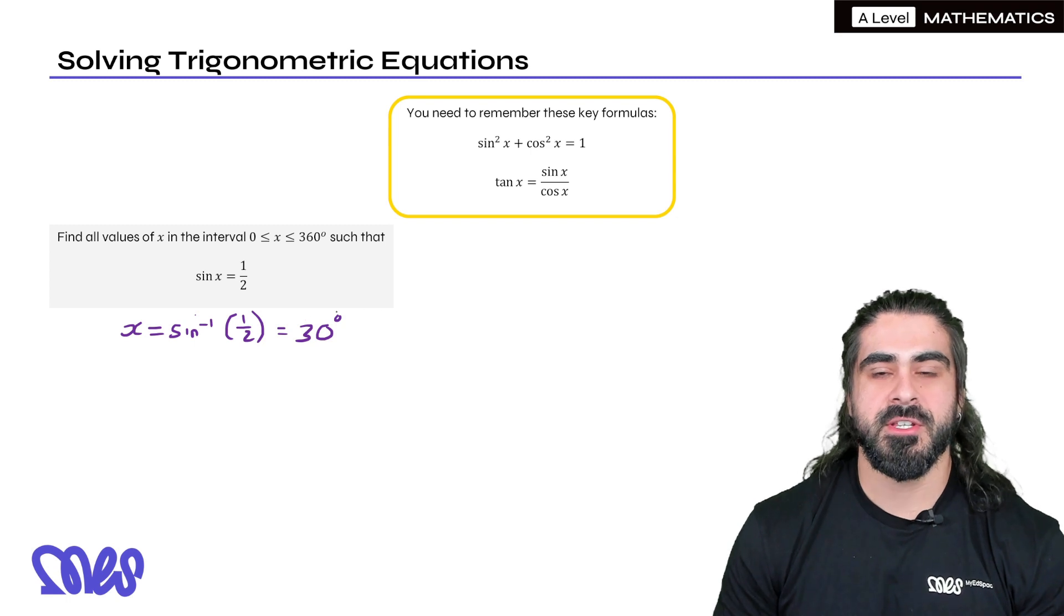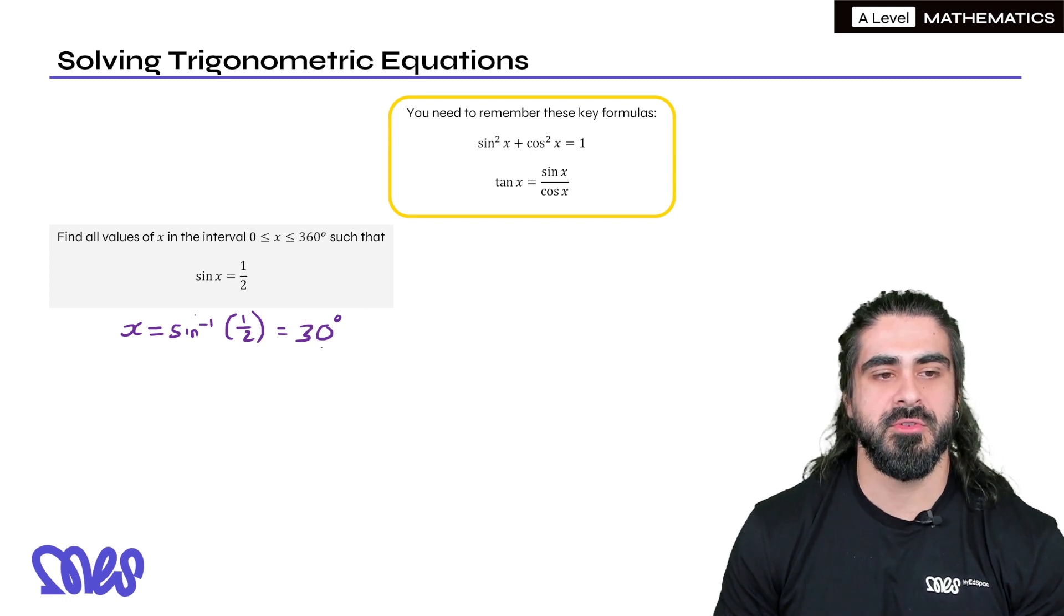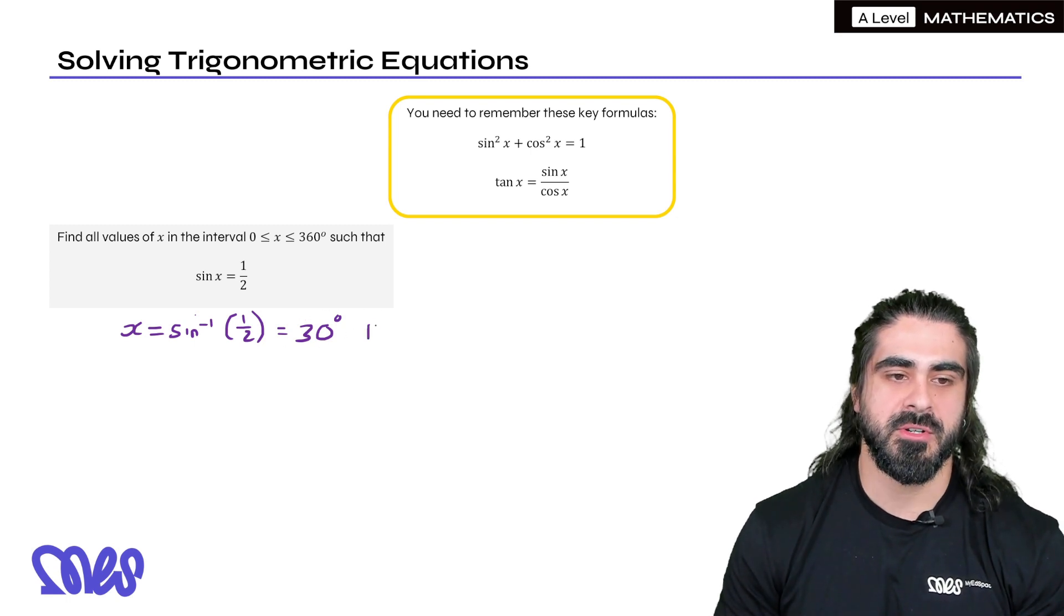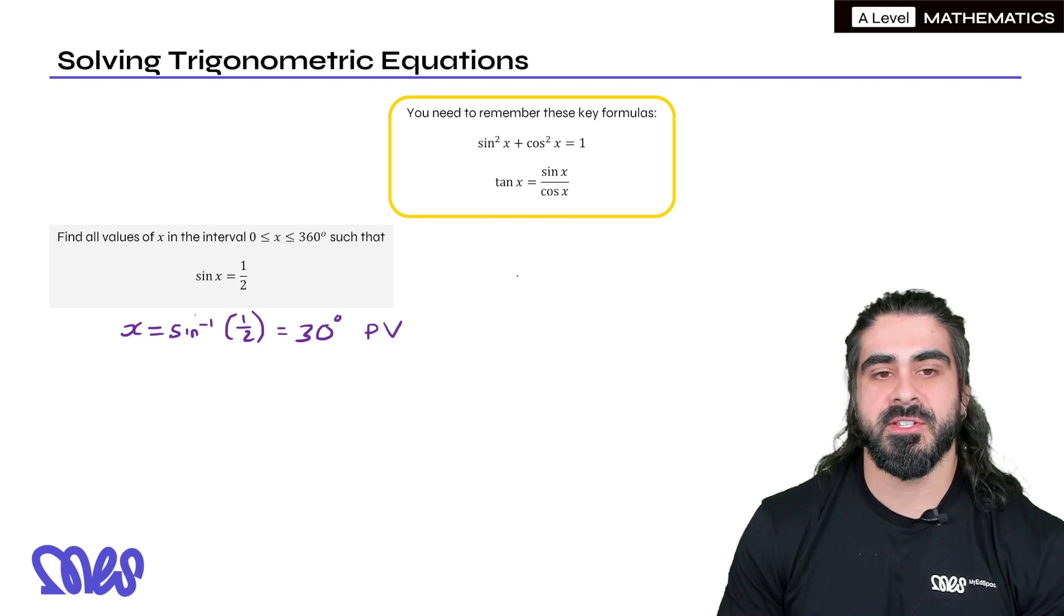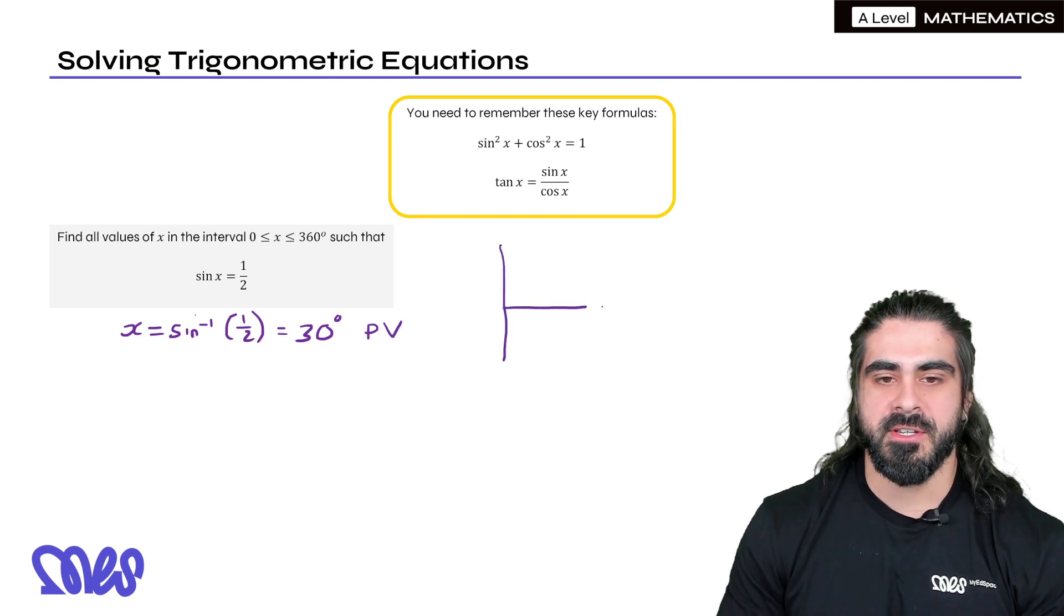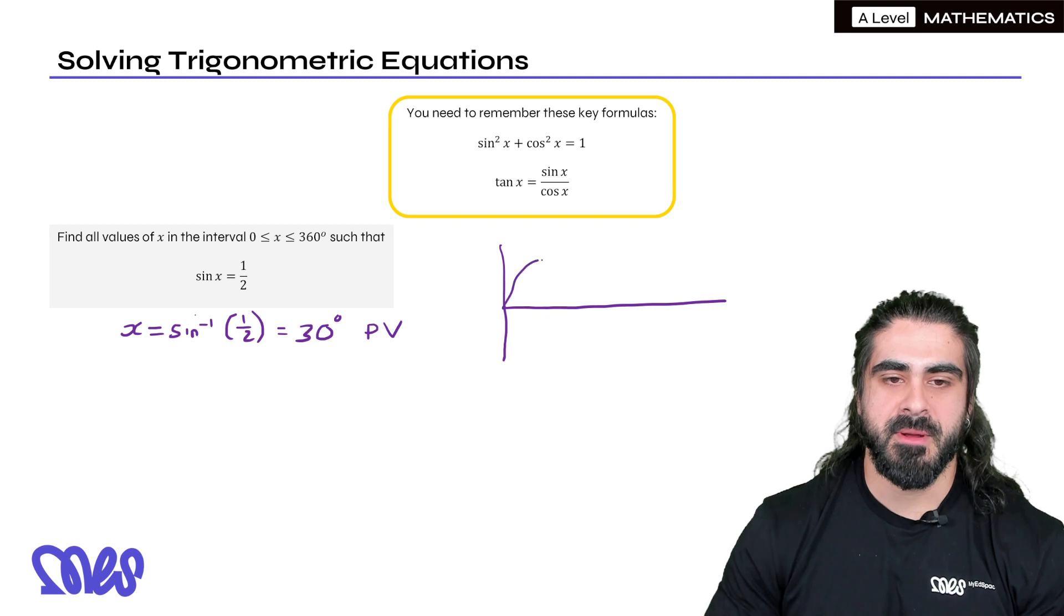So we're going to say x is inverse sine of 1 half and in degrees that gives us 30 degrees. Now I give these a name. They're known as the primary values, the first values that the calculator gives you. We're going to call it the PV.